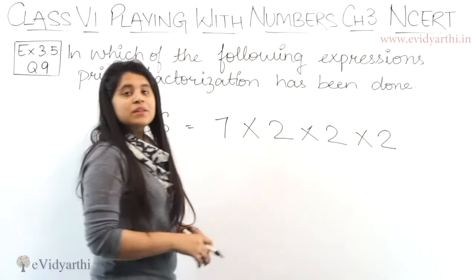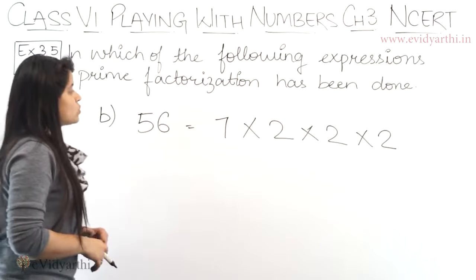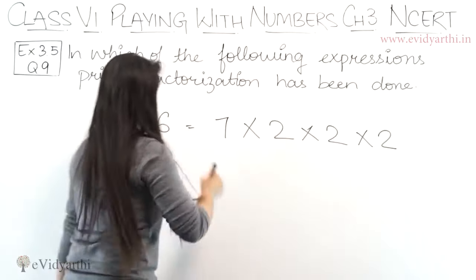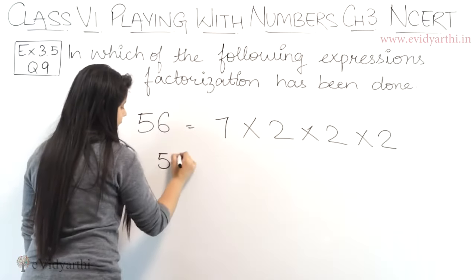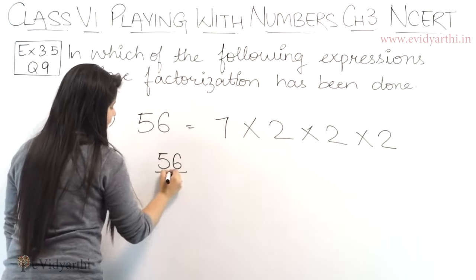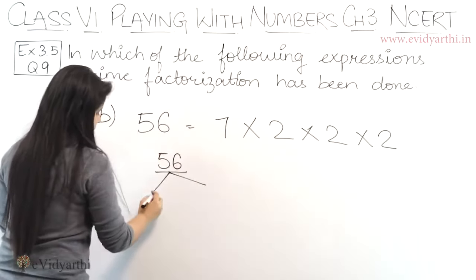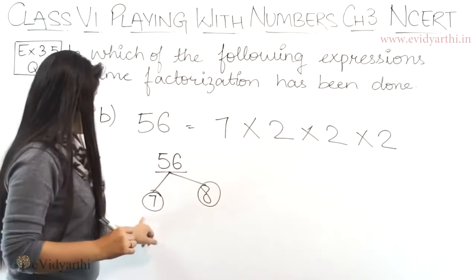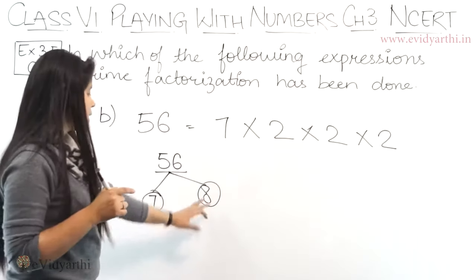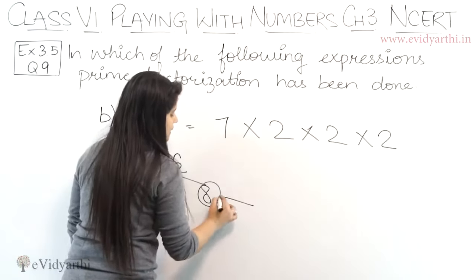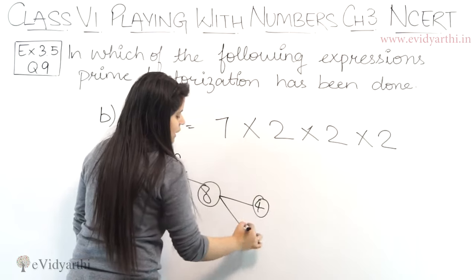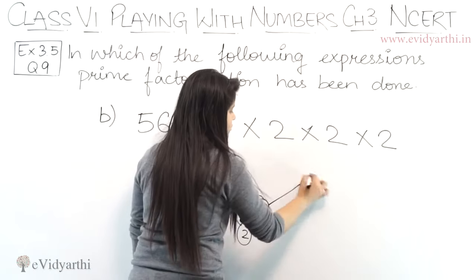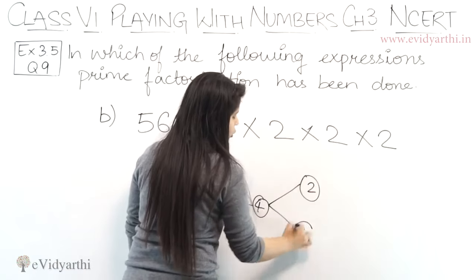Now coming to the B part. B part we have 56 equals to 7 into 2 into 2 into 2. So let's check if these are the factors. So if I expand 56, we can write it as 7 into 8. 7 times 8 is 56. 8 can be expanded further. I can write it as 4 into 2. 4 times 2 is 8. Now 2 cannot be expanded but 4 can be. This will be 2 and 2.